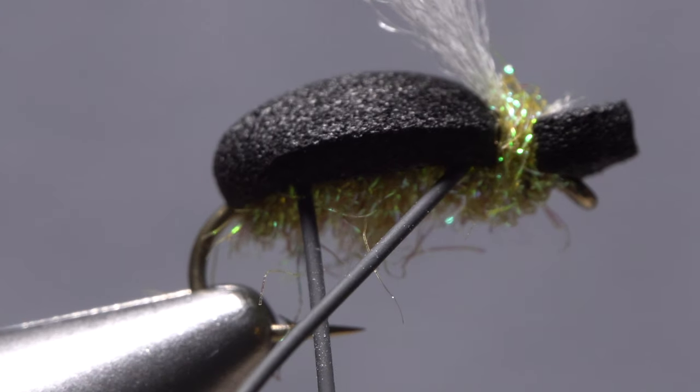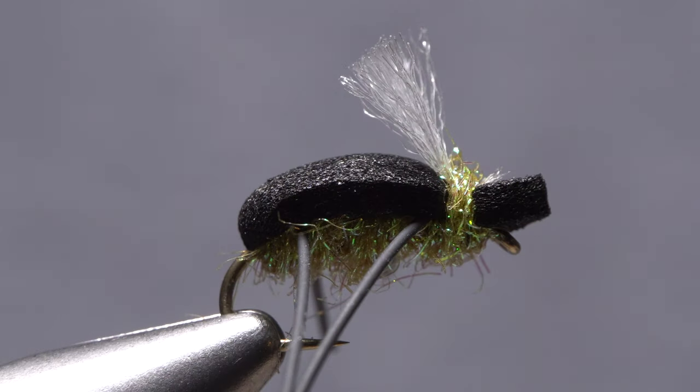And that's the turbo beetle. Skittering this fly on the water's surface then pausing it seems to drive fish absolutely crazy and often results in extremely aggressive takes.